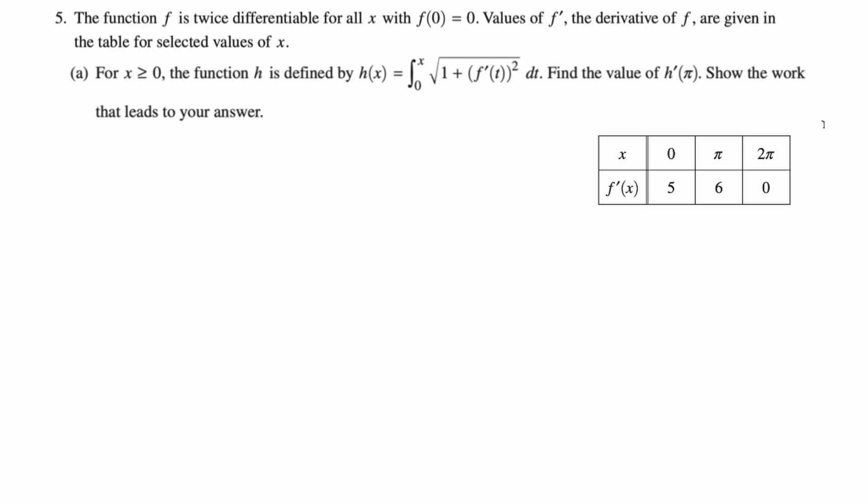For x greater than or equal to 0, the function h is defined as h(x) equals the integral from 0 to x of square root of 1 plus f prime of t squared dt. We want to find the value of h prime of π and show the work that leads to our answer.